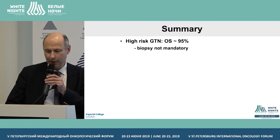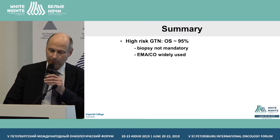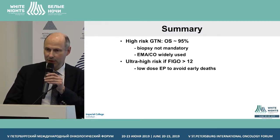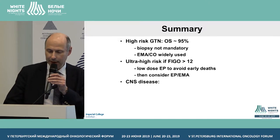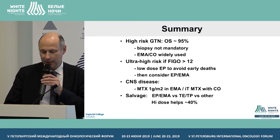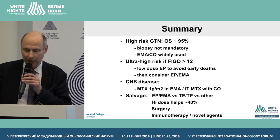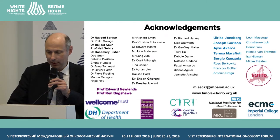In summary: high-risk GTN overall survival you can expect 95%. Biopsy is not mandatory. EMACO is widely used. Ultra-high-risk is FIGO score 13 or above with various treatment adaptations required including for CNS disease. For salvage, high-dose surgery is available, and I think high-dose chemotherapy is going to be replaced by immunotherapy. Thank you for your attention.